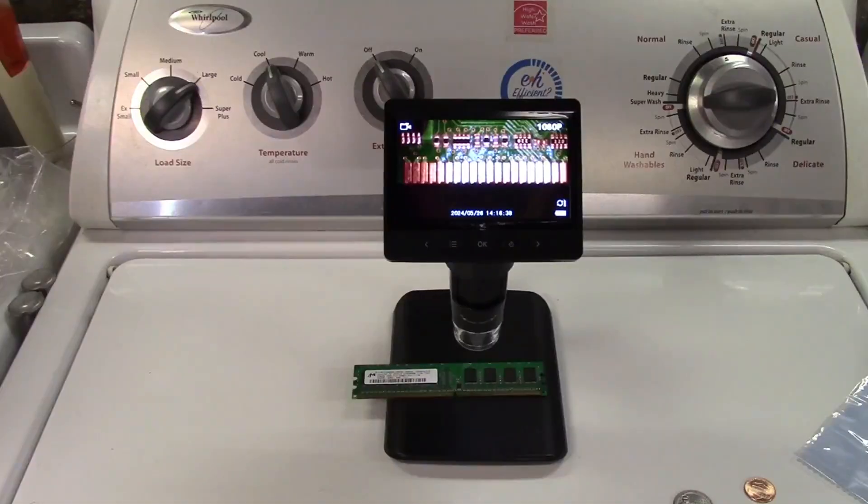So once again this was the AOPIC 500X Digital Microscope with 4.3 inch screen. If you'd like to purchase this item I'll leave a link in the video description where you can find the item available for sale on Amazon.